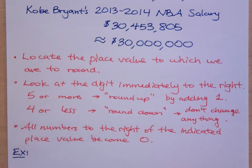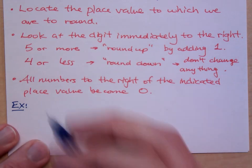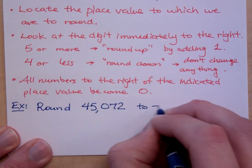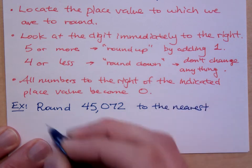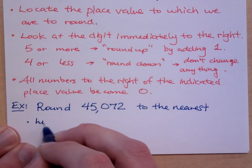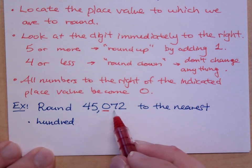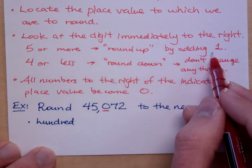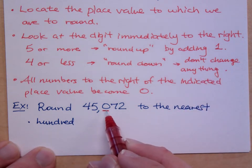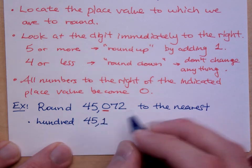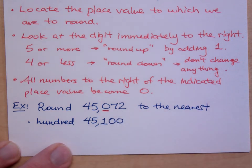Let's take the number 45,072 and round it to the nearest hundred. Where's the hundreds spot? The zero is the hundreds digit. Look at the number immediately to the right — it's seven, which is five or greater. So we round up by adding one to the zero, making it a one, and everything to the right becomes zero. The answer is 45,100.